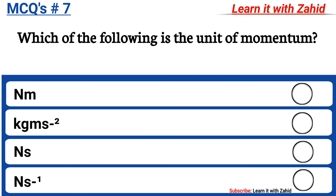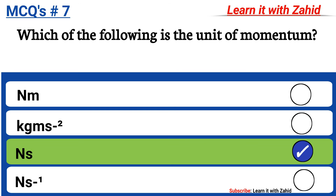Which of the following is the unit of momentum? Option A Newton meter, option B kilogram meter per second square, option C Newton second, option D Newton per second. The correct answer is option C, Newton second.